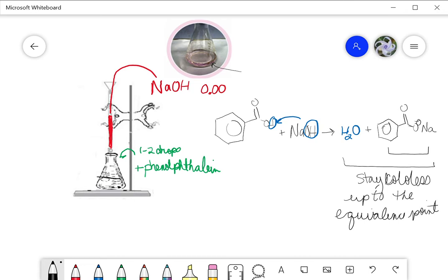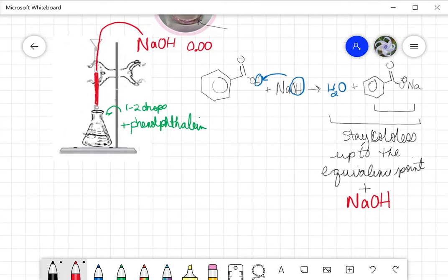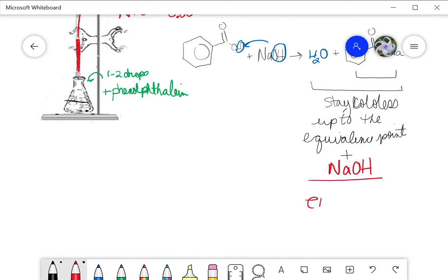Once we reach the equivalence point, this still to us looks colorless. So once we add one more drop of sodium hydroxide, I'll upset the balance and go beyond the equivalence point to the endpoint. This makes the endpoint, and now that small amount of sodium hydroxide that's left over after all of the benzoic acid has been absorbed, this is what will be light pink.